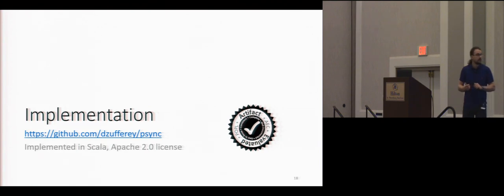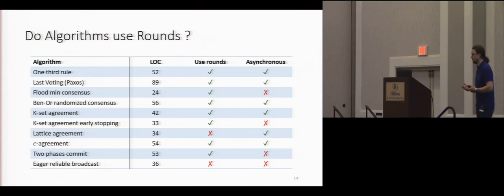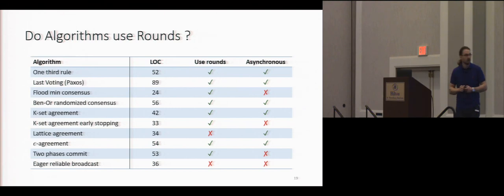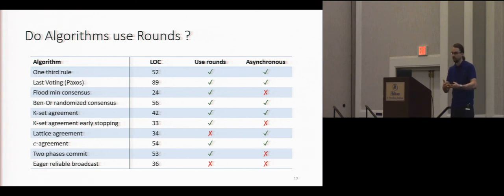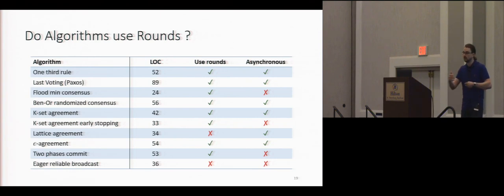We have implemented an embedding of this domain-specific language in Scala — the code is available online. First, is it a suitable abstraction for such systems? We implemented a few algorithms: the first three are consensus variants, the rest are weaker versions of agreement problems. In general, when you read papers presenting these algorithms, the papers already use a round structure. In most cases the algorithms in the literature are naturally presented in this round structure, so it's a very good fit. There are a few algorithms presented in an event-driven way, but they can be easily cast into rounds.